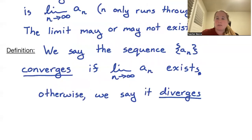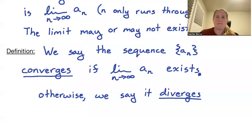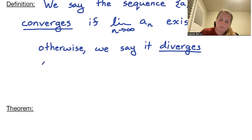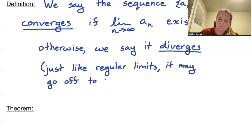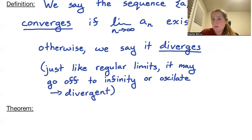So similar to limits in general, it may go off to infinity. Just like regular limits, it may go off to infinity or oscillate, in which case we say it's divergent. Because we're at infinity, there's no way to approach different numbers from opposite sides, because we're just coming from one side.